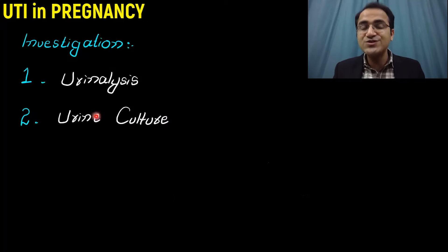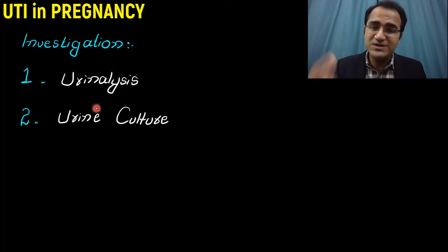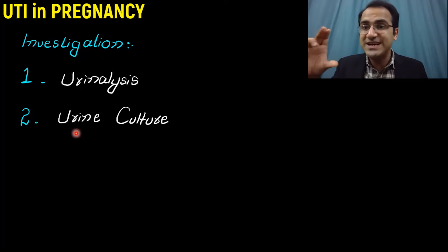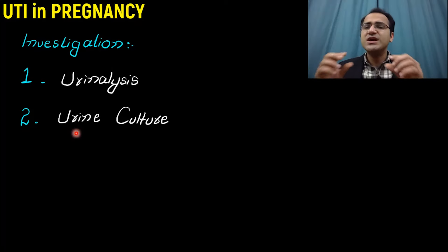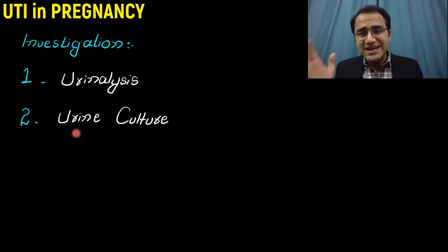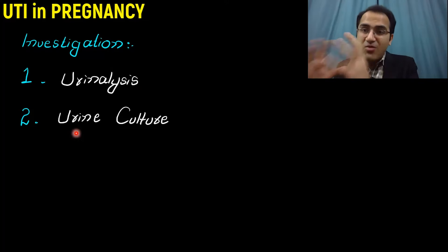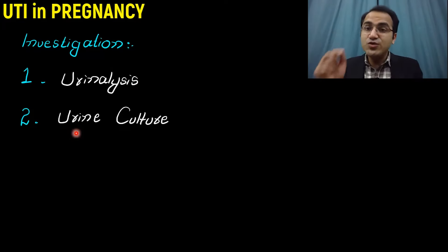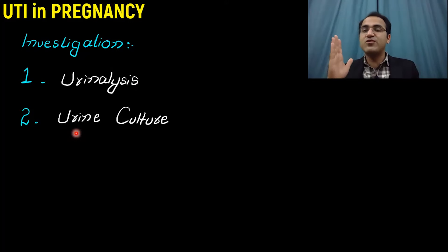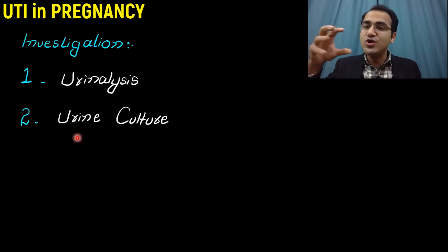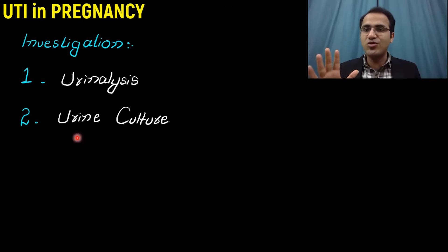Investigations done for the diagnosis of UTI in pregnancy include urinalysis, in which pus cells greater than or equal to five per high power field is diagnostic for UTI. UTI in pregnancy is a complicated UTI, and in complicated UTI you perform urine culture before starting empiric therapy. So if the patient has UTI in pregnancy, you take a urine sample for urine culture, then you start antibiotic therapy.